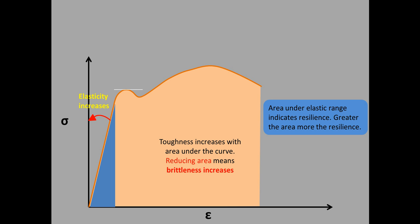According to the yield point, as the yield point goes upward hardness increases, and if the yield point goes down, hardness decreases, meaning the metal will be soft. This point shows the ultimate tensile strength. I hope you have understood how to interpret the stress-strain curve and what each point indicates. Thanks for watching the video.